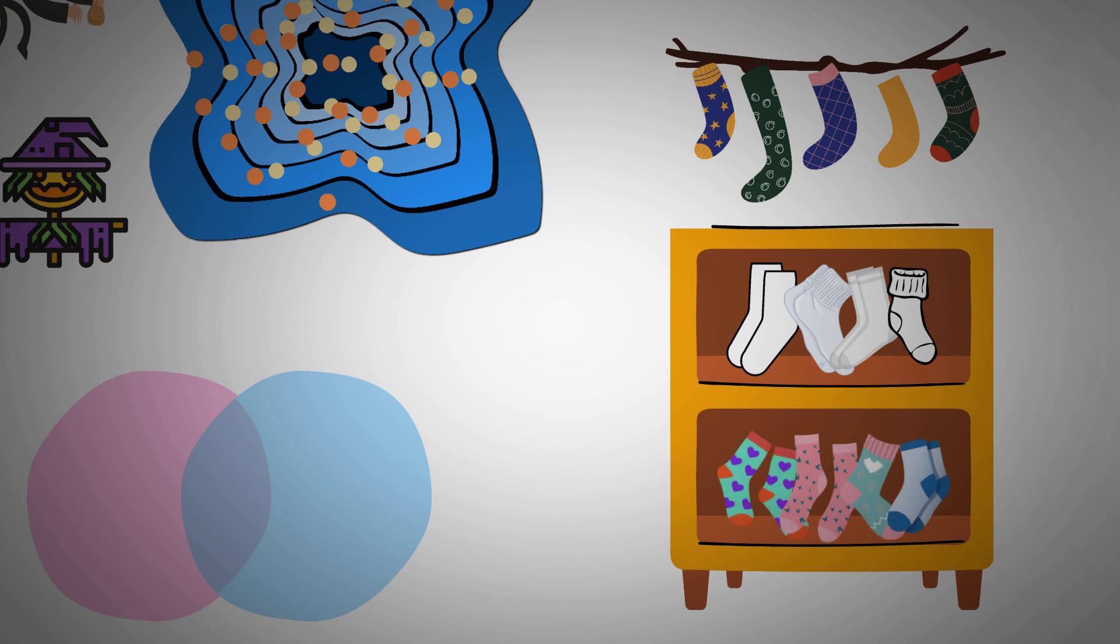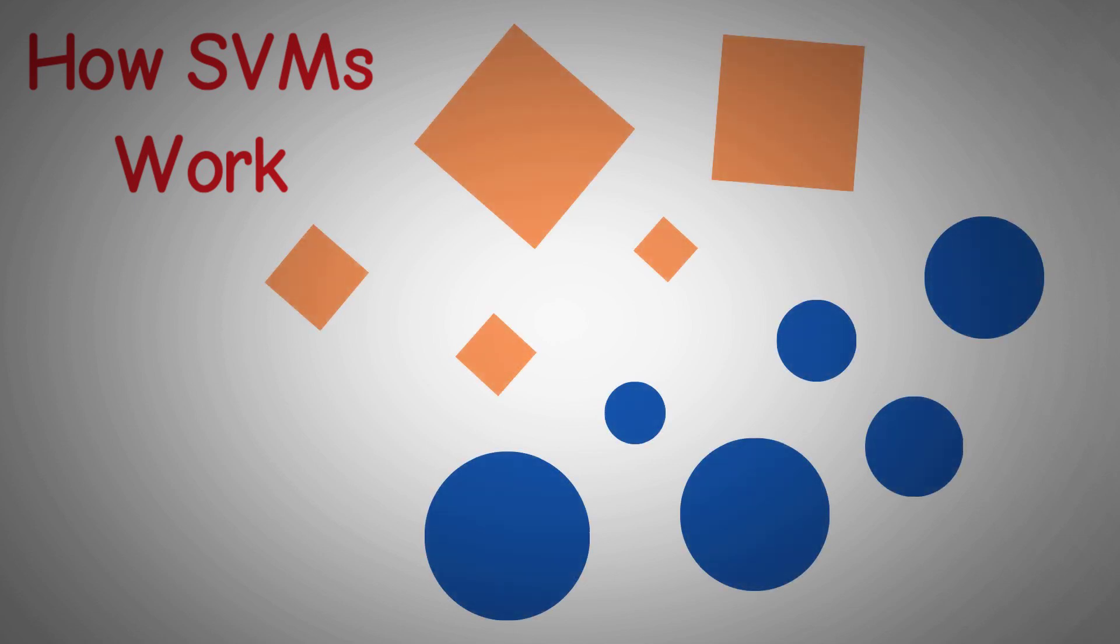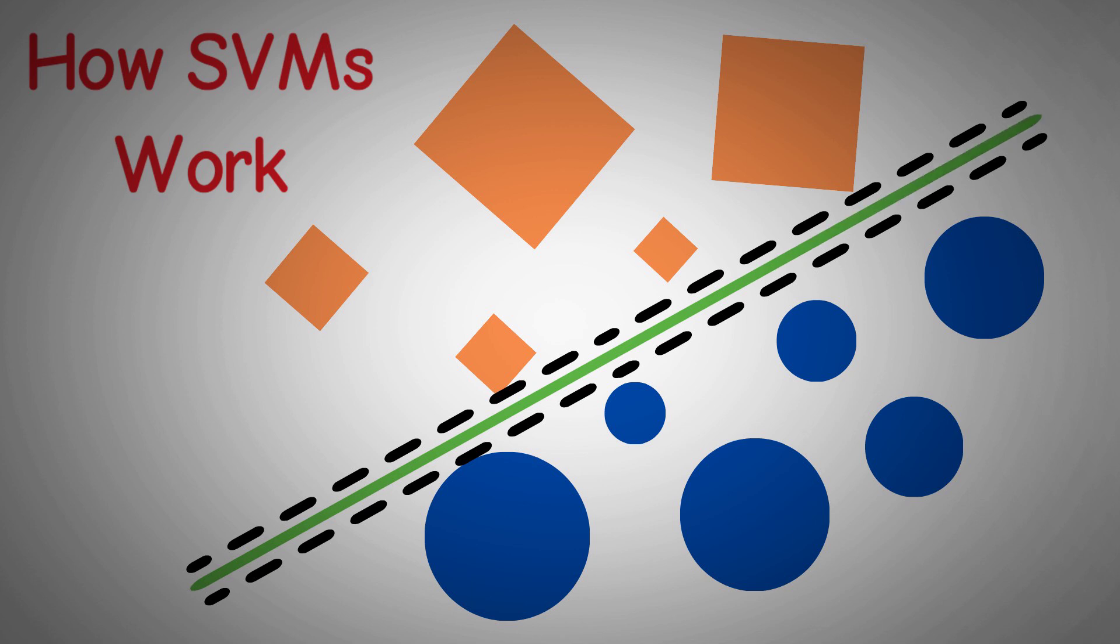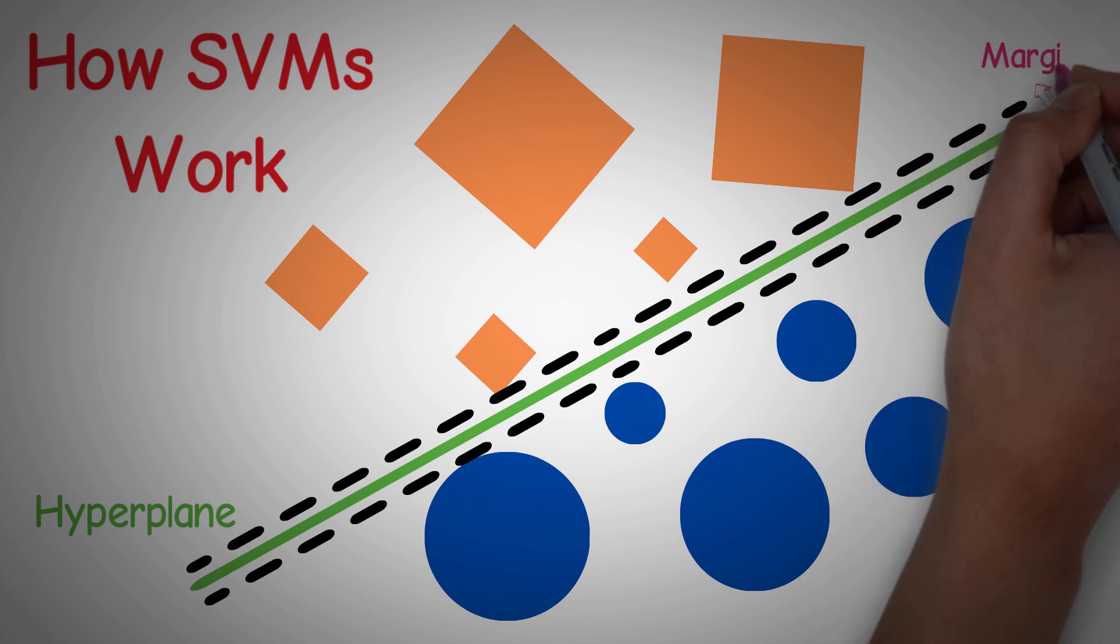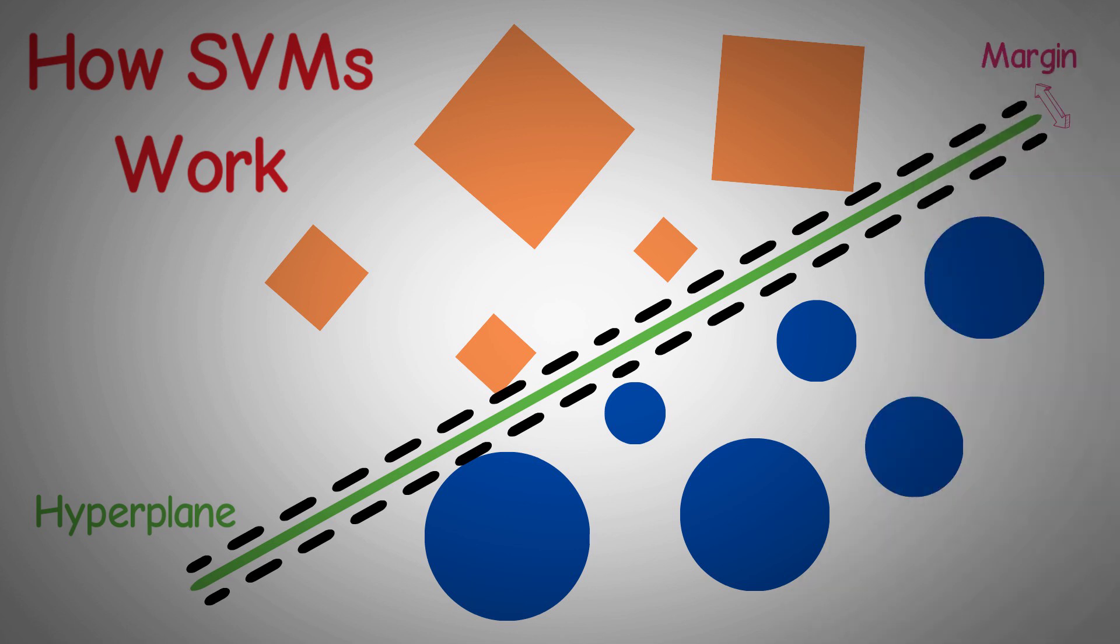Here's a bit more technical detail. SVMs work by finding the hyperplane, or the decision boundary. That's basically a line in 2D, a plane in 3D, and so on, that best separates the data into different classes. The best hyperplane is the one that has the largest margin between the two groups of data points.